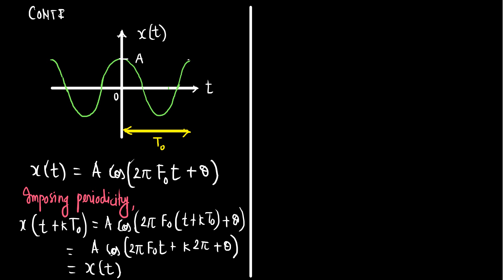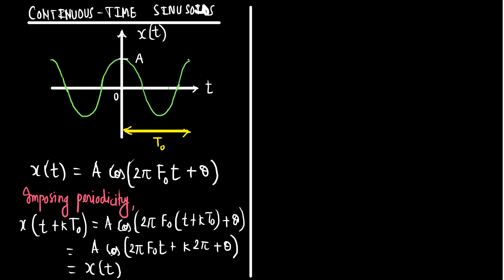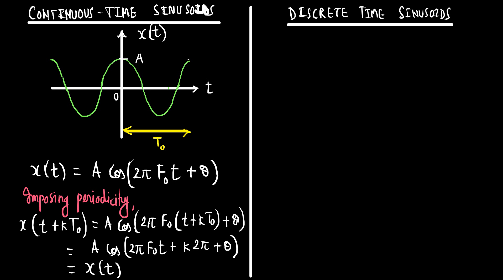Now let's look in parallel at discrete-time sinusoids. The discrete-time sinusoids are obtained from continuous sinusoids by sampling. So x(n·Ts) = A·cos(2π·f₀·n·Ts + θ).